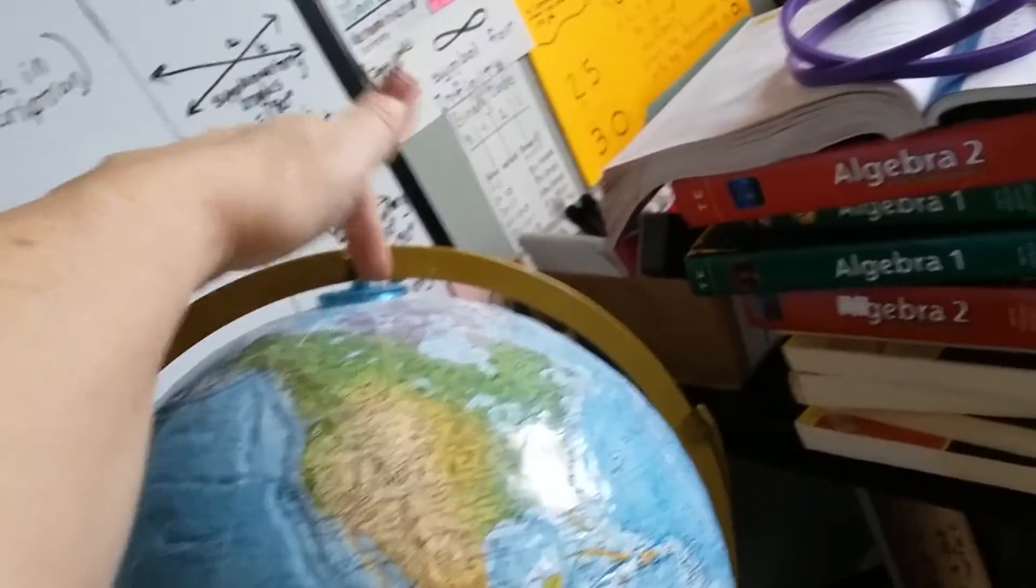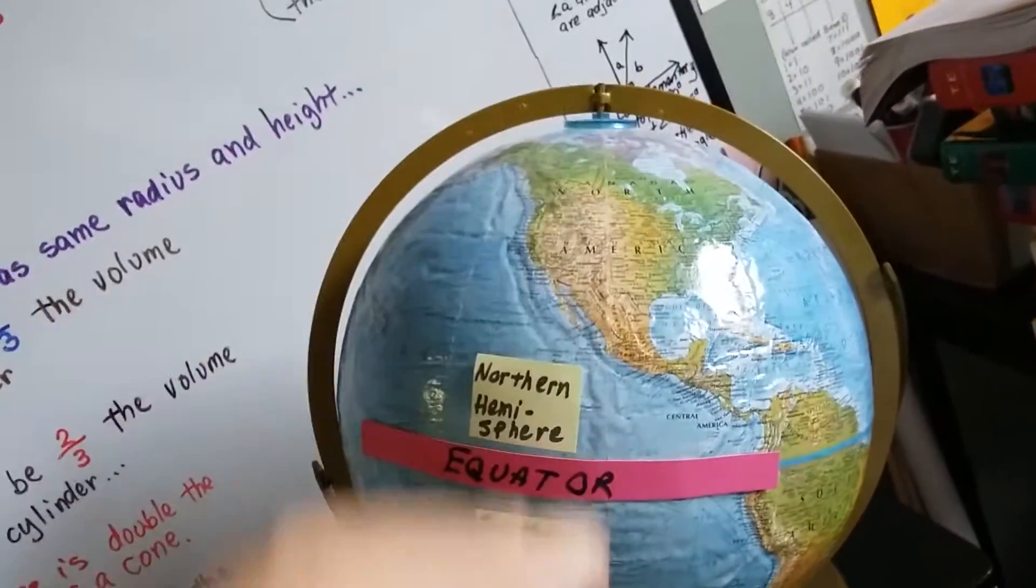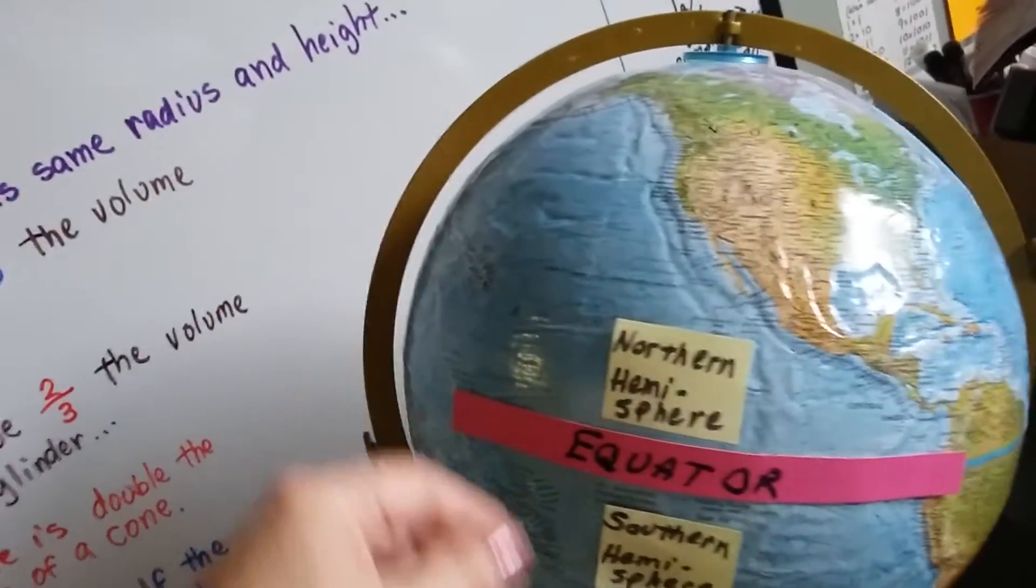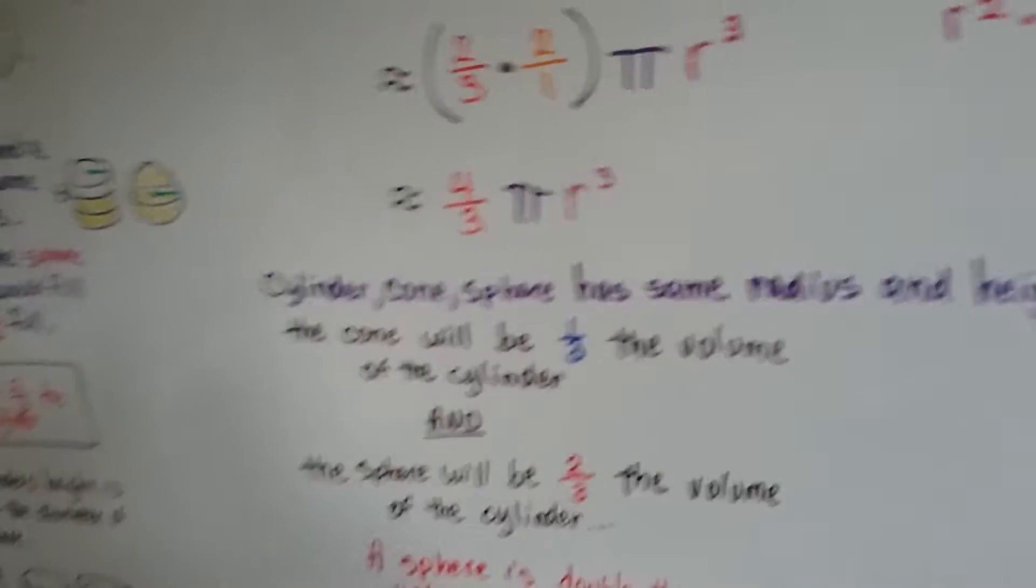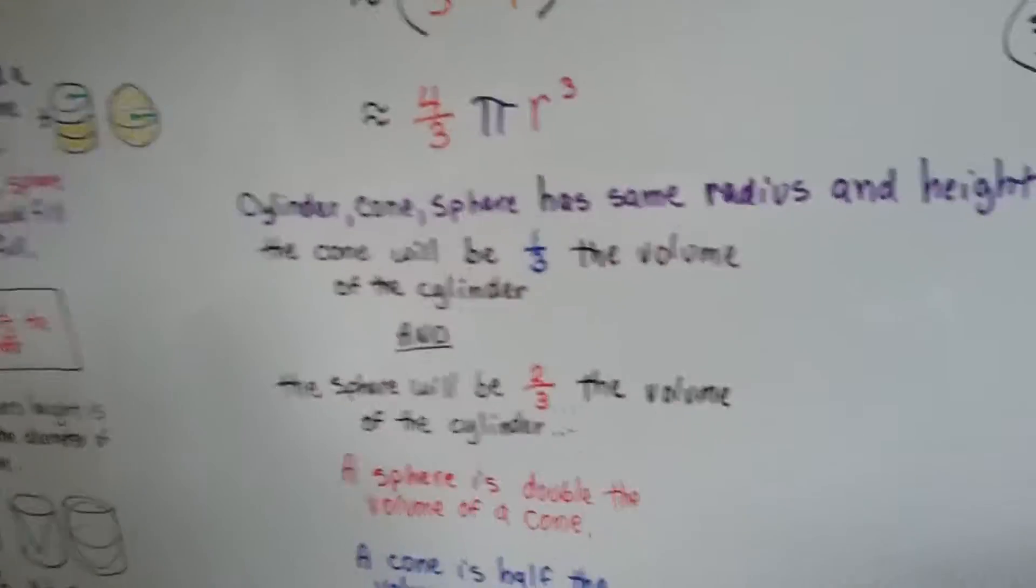Actually, this point running diagonally through our Earth like that, that's our axis. And you'll come across that in geometry in the future, too. Alright, so we're going to put this away. And I want to show you something else.